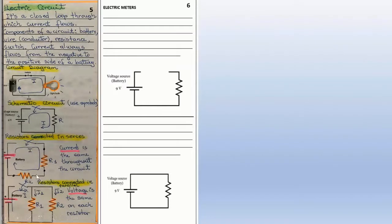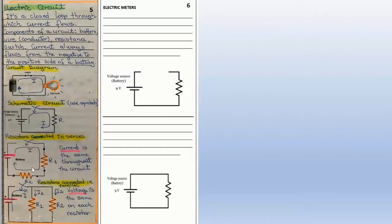In a series circuit, the terminal of one resistor connects to the terminal of the other resistor, which then connects to the battery source on one side and the switch on the other. Current is the same throughout a series circuit. In a parallel circuit, both terminals of the resistors connect together and then connect to the switch and battery. Voltage is the same across each resistor in a parallel circuit, and the current splits between branches.